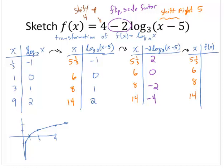So 2 + 4 is 6. 0 + 4 is 4. -2 + 4 is 2. -4 + 4 is 0.